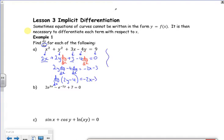If I take dy by dx out as a factor, I've got 2y minus 4 is minus 2x minus 3. Divide by the 2y minus 4. That's that example done.